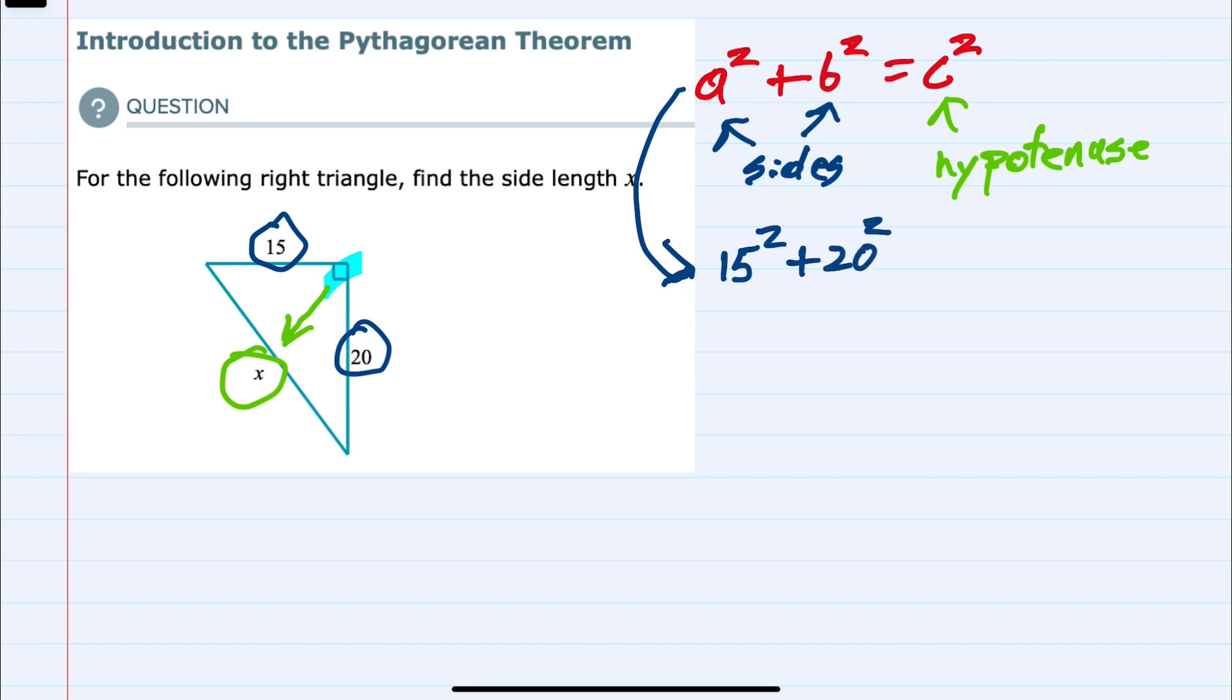Since b is 20, and our c is the x, this c squared is going to be x squared.